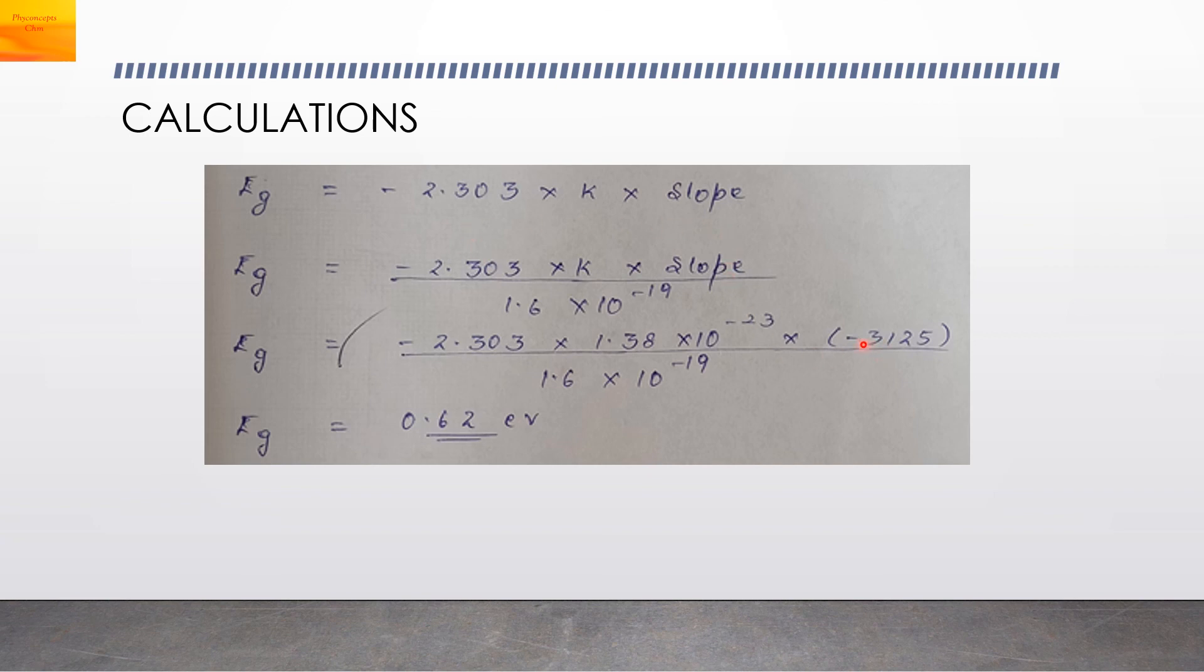The slope we can substitute here. We want the answer in electron volts, so convert the joules into electron volt by dividing by 1.6 into 10 raised to minus 19. Boltzmann constant is substituted as 1.38 into 10 raised to minus 23. And we get the band gap energy as 0.62 electron volt.